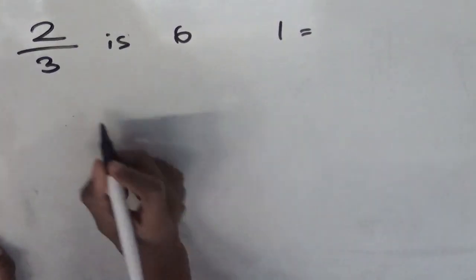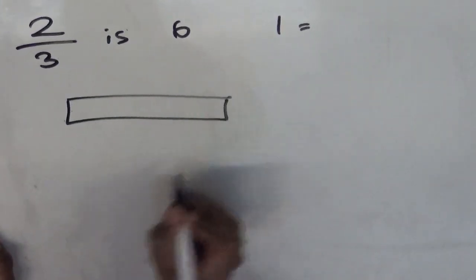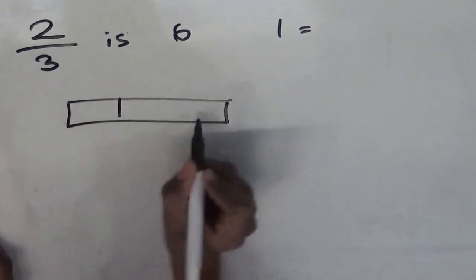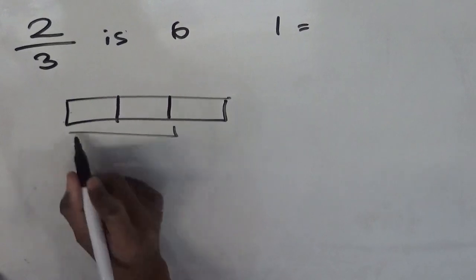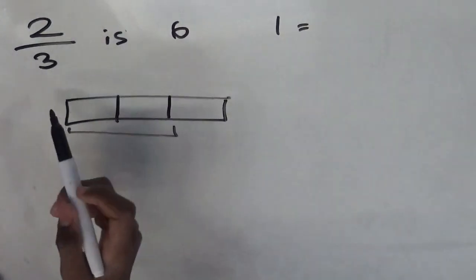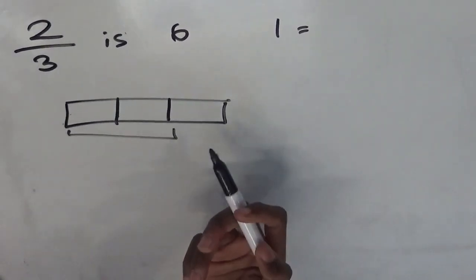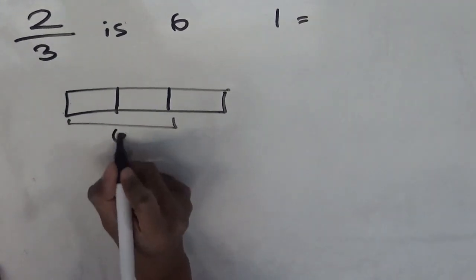So if we model this out as a bar, and do the denominator, which will give us 3 blocks, then we underline 2. And then we know that 2 thirds, 2 of these 3 blocks, is going to be 6. So if we label it 6,